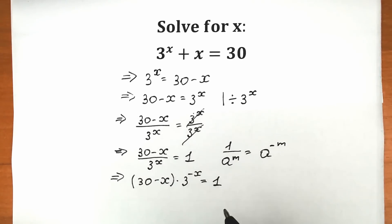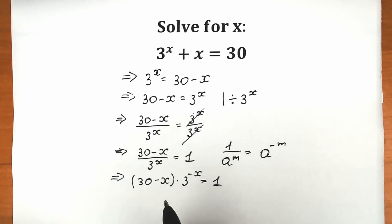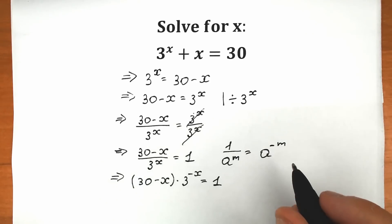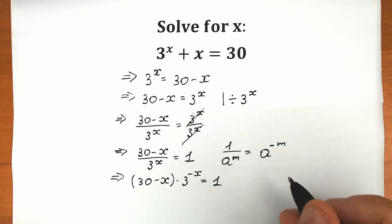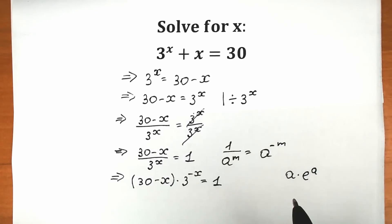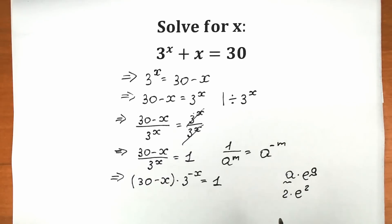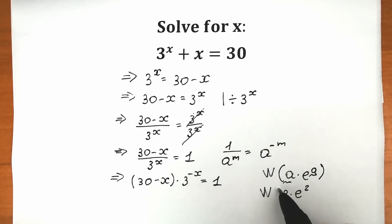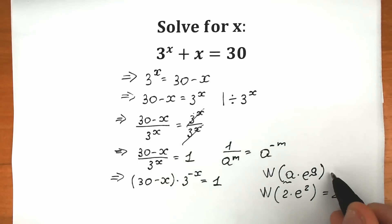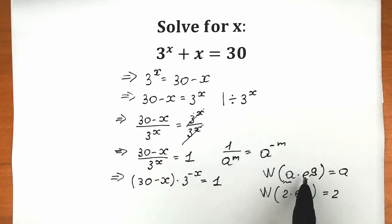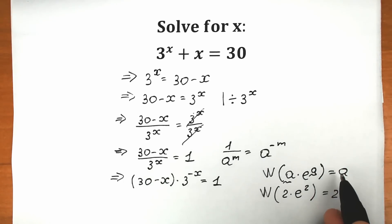Now I'm going to explain what I'm trying to do — I want to create an expression where we can apply the Lambert W function. The basic rule is: if you have a times e to the power a, and you apply Lambert W function, the result is simply a. For example, Lambert W of 2 times e to the power 2 equals 2, where a equals 2.